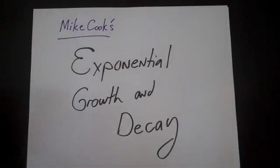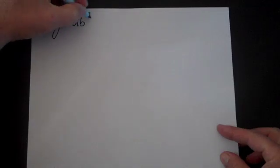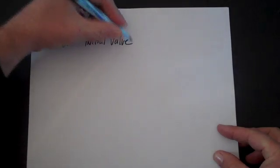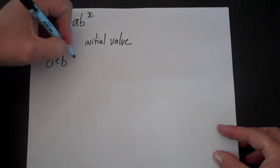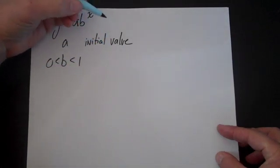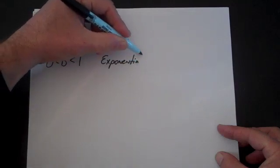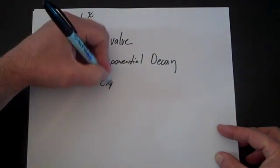Let's look explicitly at exponential growth and decay problems. We're looking at exponential growth problems of the form y is equal to a times b to the x. The trick here is that a will be the initial value. If b is between 0 and 1, this is going to be an exponential decay problem, and if b is greater than 1, this is going to be an exponential growth problem.